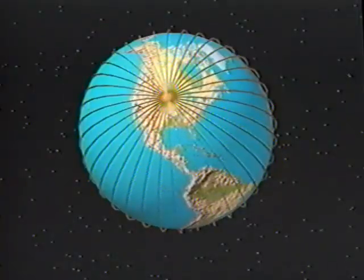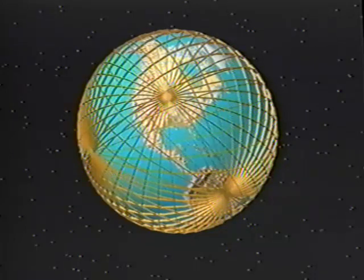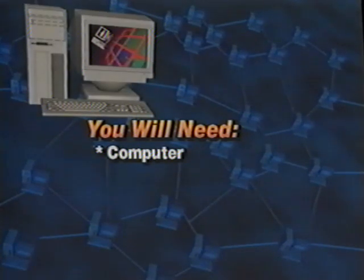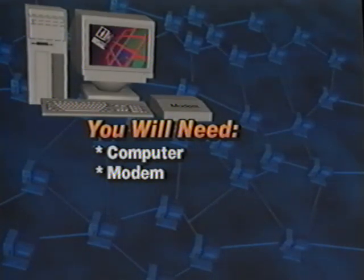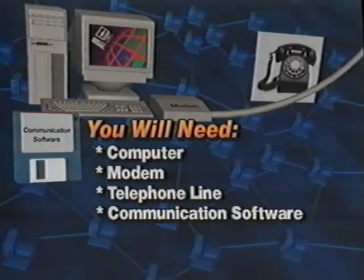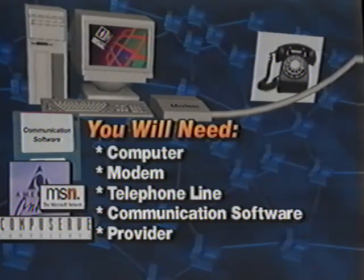The beauty of the internet is that we don't have to know about how it works. We can just accept the fact that it does work smoothly, easily, and seamlessly on a worldwide basis. Let's start by listing the things we need in order to gain access to the internet. The computer is the first item on the list. Your computer must have a modem that is connected to a telephone line. You'll also need data communication software and a provider to gain access to the internet.